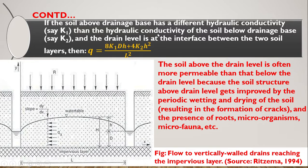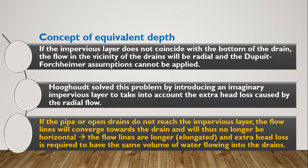If the soil is not isotropic or homogeneous and has two layers with different hydraulic conductivities, we can write: q = (8K₁Dh + 4K₂h²)/L², where K₁ is the hydraulic conductivity above the drain level and K₂ is that of the bottom layer. The soil above the drain level is often more permeable than that below the drain level.